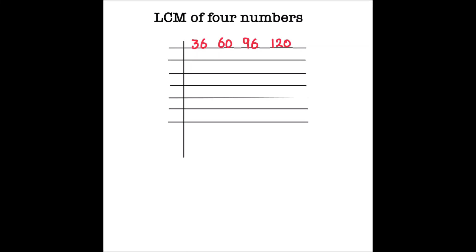Hello students. In this video we are going to learn how to find the LCM of four numbers using the prime factorization method. In this method we divide numbers using prime numbers, find the factors of the numbers, and then multiply the common factors to find the least common multiple.